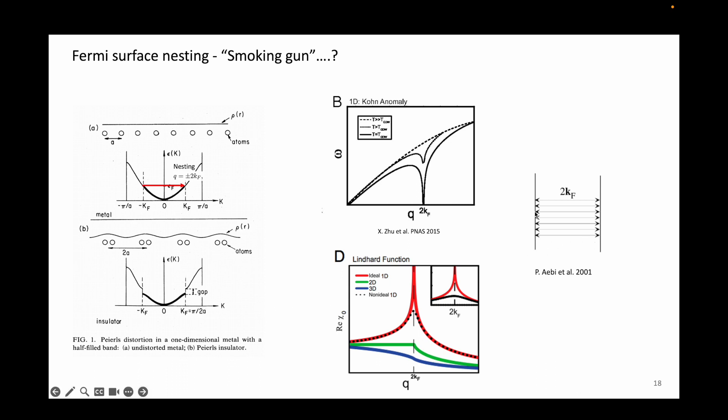The Fermi surface of a 1D metal, such as that of the Peierls thought experiment, is a pair of parallel planes. As you can see, the Fermi vector connecting the Fermi levels of the system can be infinitely defined between the two perfectly parallel planes. You can slide the Fermi vector and they would still connect the two Fermi levels. This is called the perfect nesting condition.